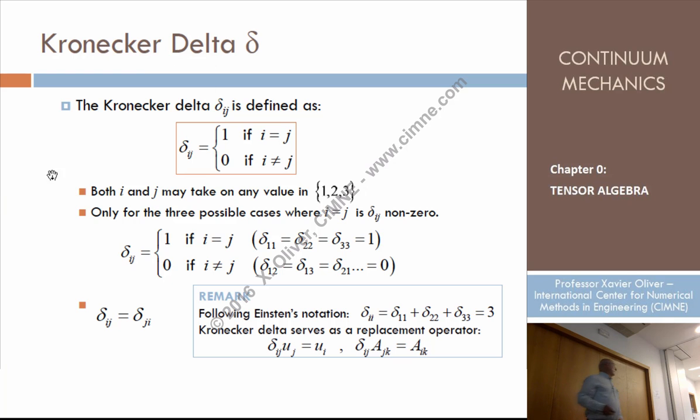Which is the Kronecker-Delta operator. That's an operator. That's an additional operator that we use because it simplifies our life. Typically it's denoted by Delta. It's a two-indices operator. So there are index i and index j. So the value of the operator is either 1 or 0.